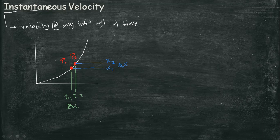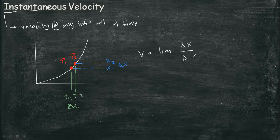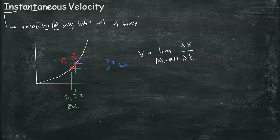In formula, we have v is equal to the limit of displacement over elapsed time as elapsed time approaches zero, or equal to the derivative of position with respect to time.